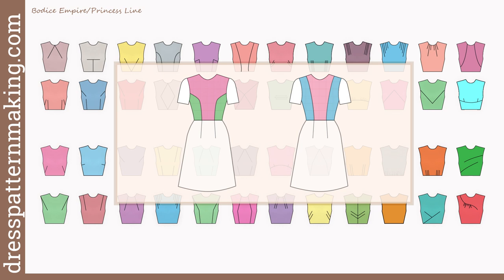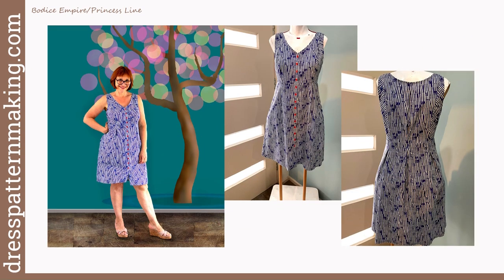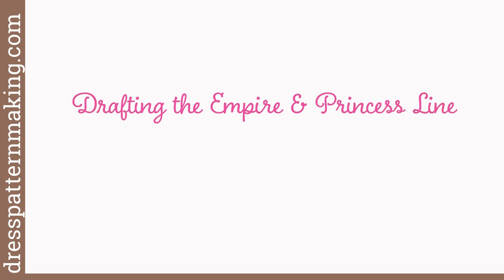Benefits of the princess line include a smoother bust curve — especially for large busts — avoiding the pointy look darts can create, and easier sewing with thick fabrics and large dart values. Vertical design lines through the bodice are also flattering and can lengthen the bodice, which pairs well with an empire line since the bodice is short relative to the skirt. The princess line is also fantastic for designing with stripes.